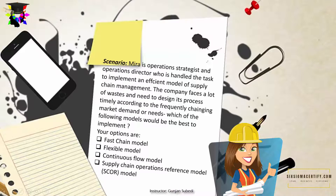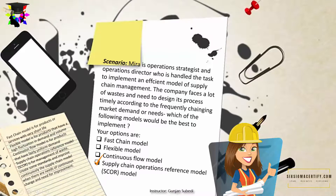The correct answer to this quiz is the Supply Chain Operations Reference model, or SCOR. Because: the Fast chain model is for products or services with a very short life; the Flexible model is for products that have high fluctuation in demand and volume; the Continuous flow model is for products that have fairly uniform demand; and the SCOR model is for management of waste, creating standards, and improving continuously the supply chain management when there is a need for continuous change or improvement. In this case, there is a need for continuous improvement because the market is changing continuously. Thank you so much for staying with me in this lecture up to this point.